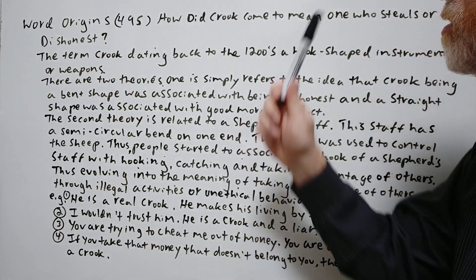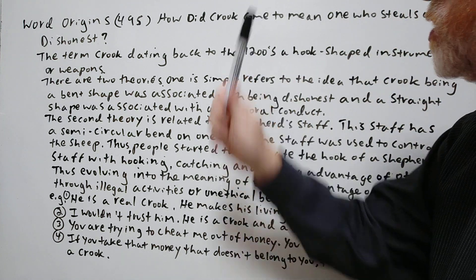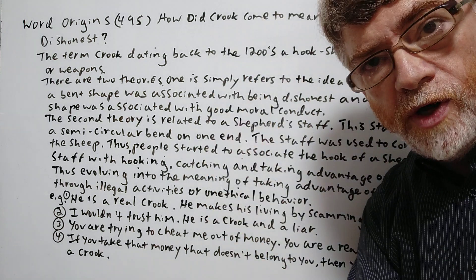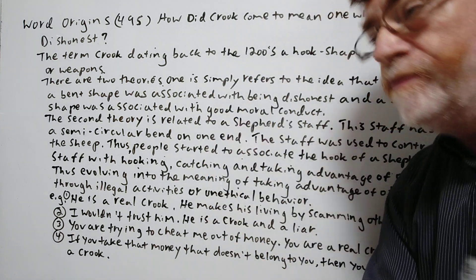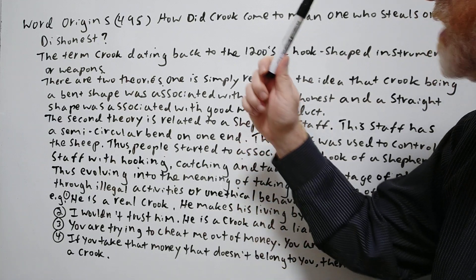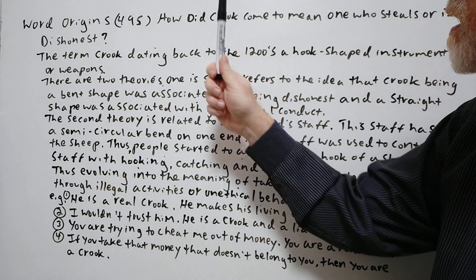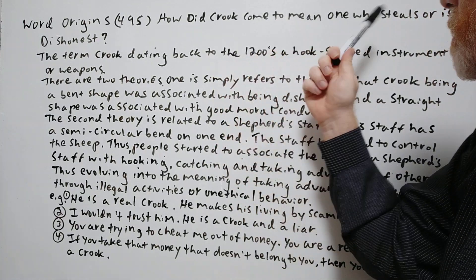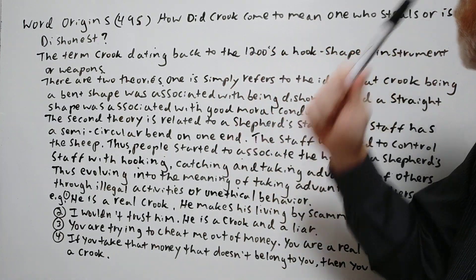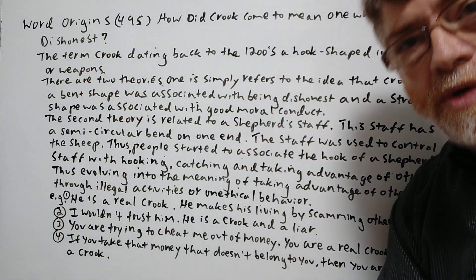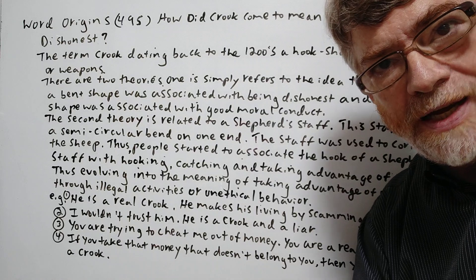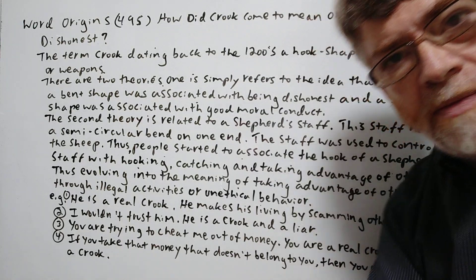Hi, this is Tutor Nick P and this is Word Origins 495. The title of today's lesson is: How did 'crook' come to mean one who steals or is dishonest?